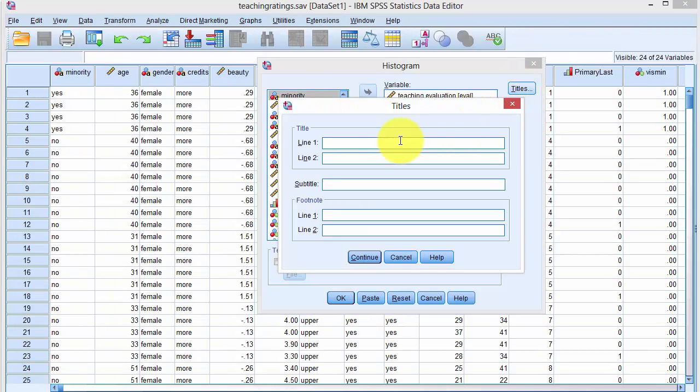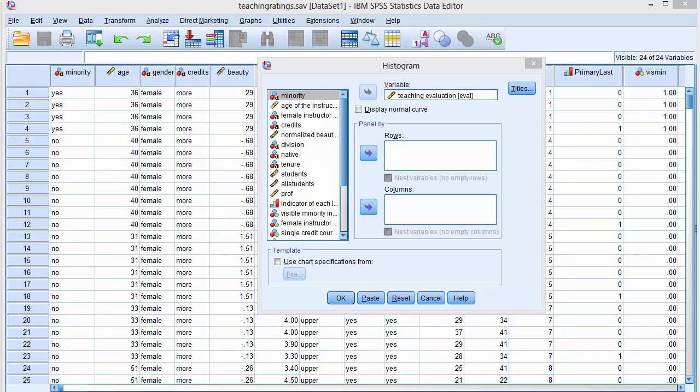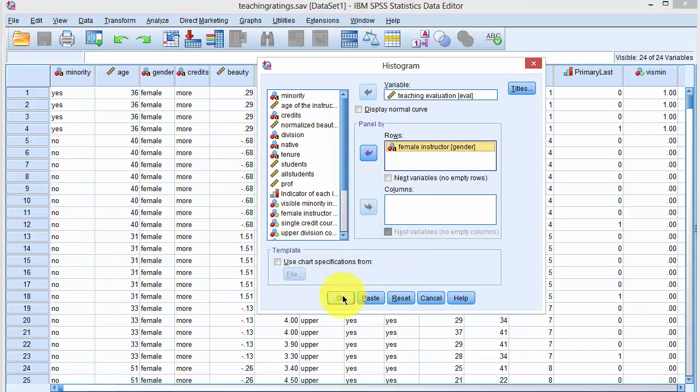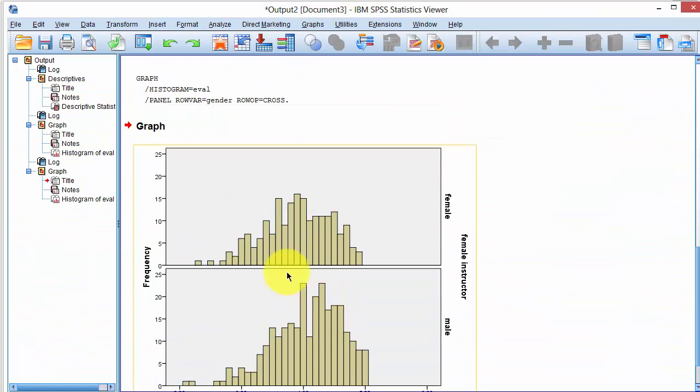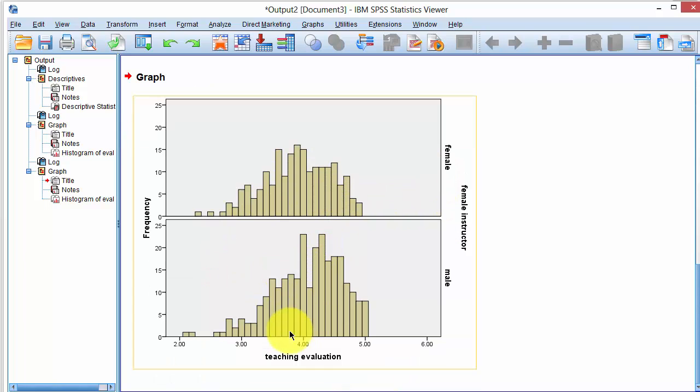We can add titles and footnotes to our chart, and we can produce multiple histograms based on a variable, let's say gender. If we click here and then say OK, you see that we have got one drawn for females and one drawn for males.